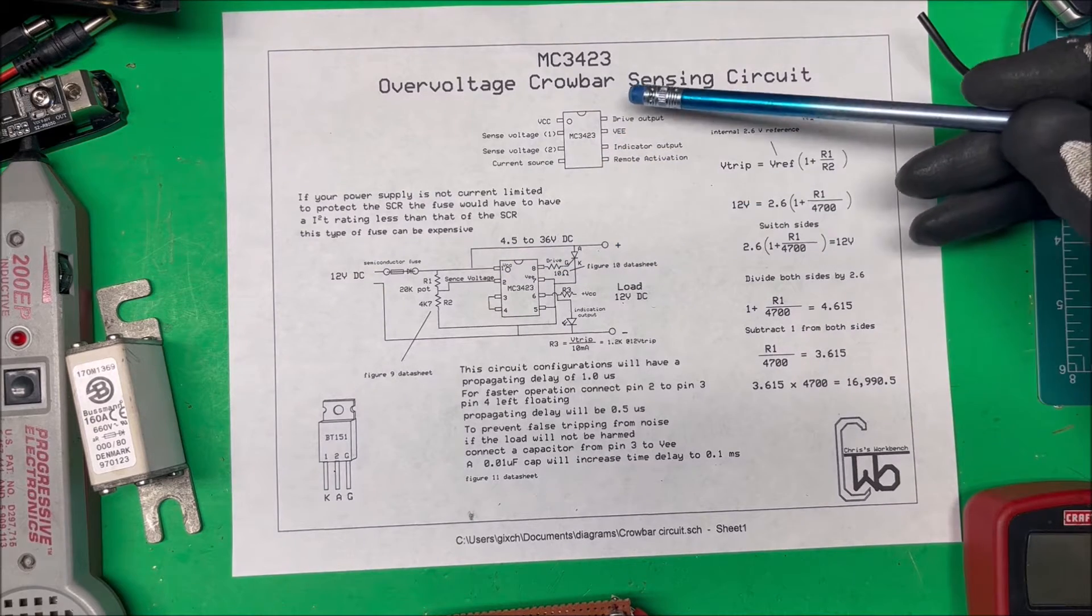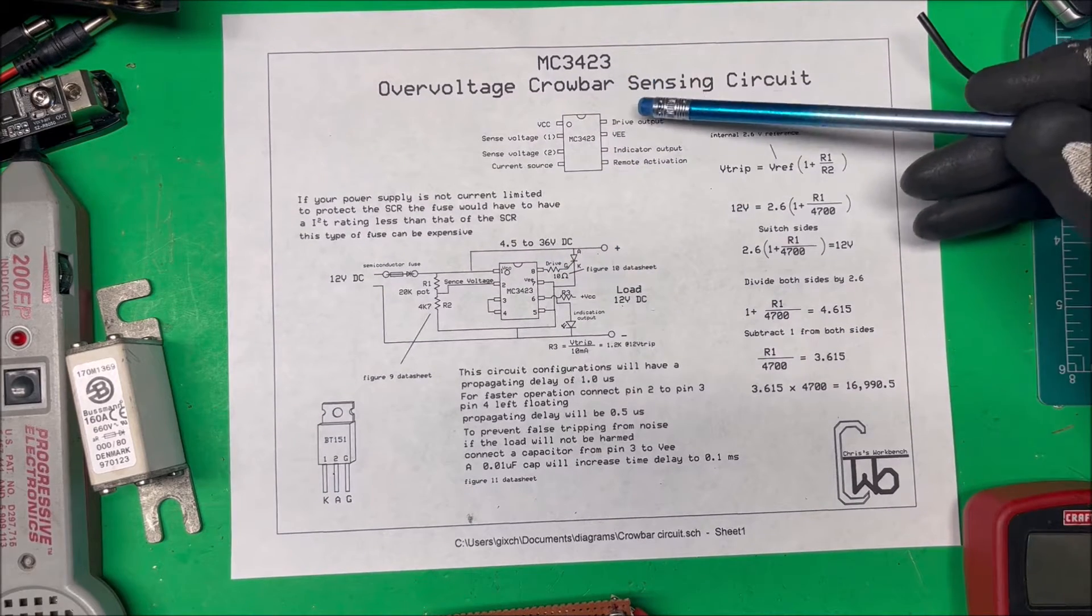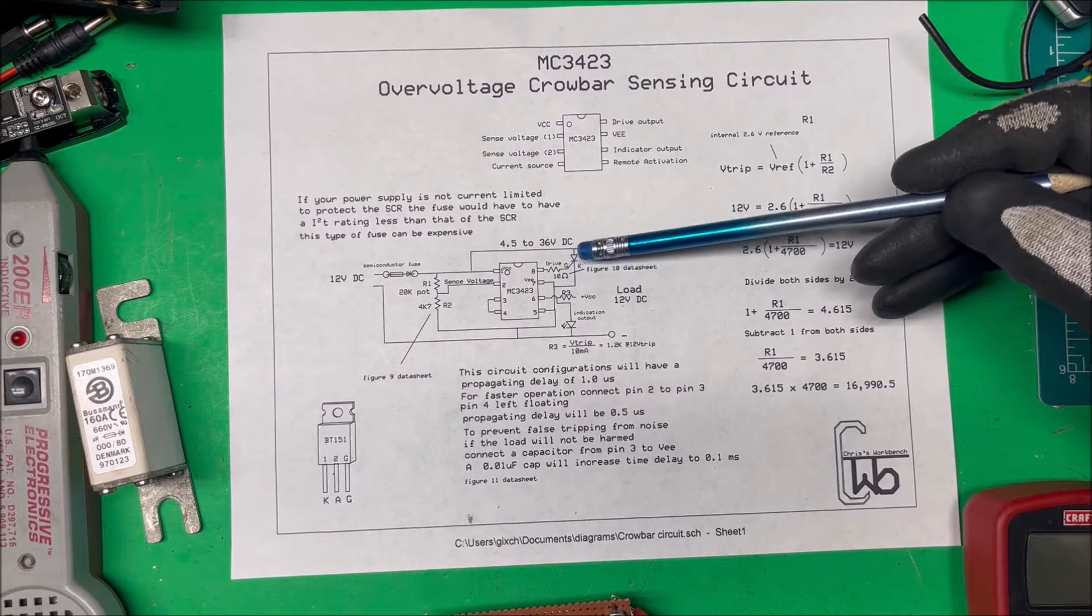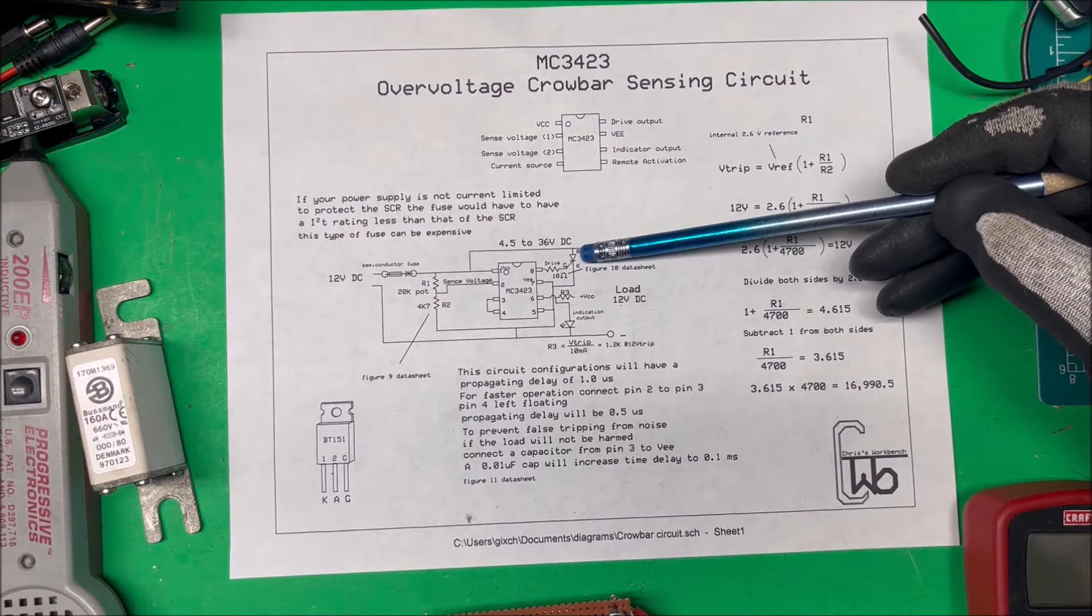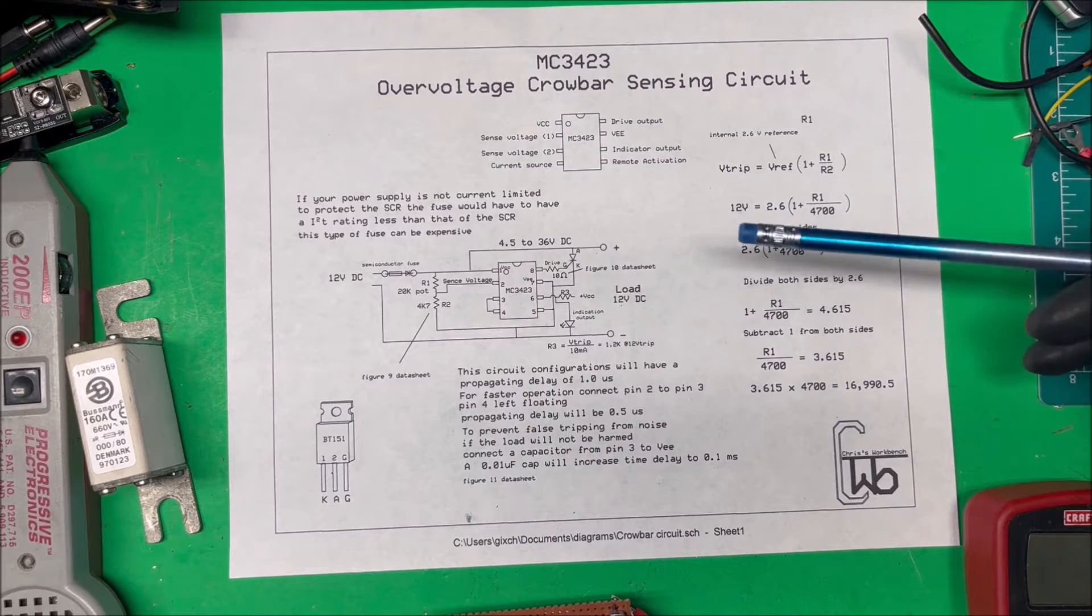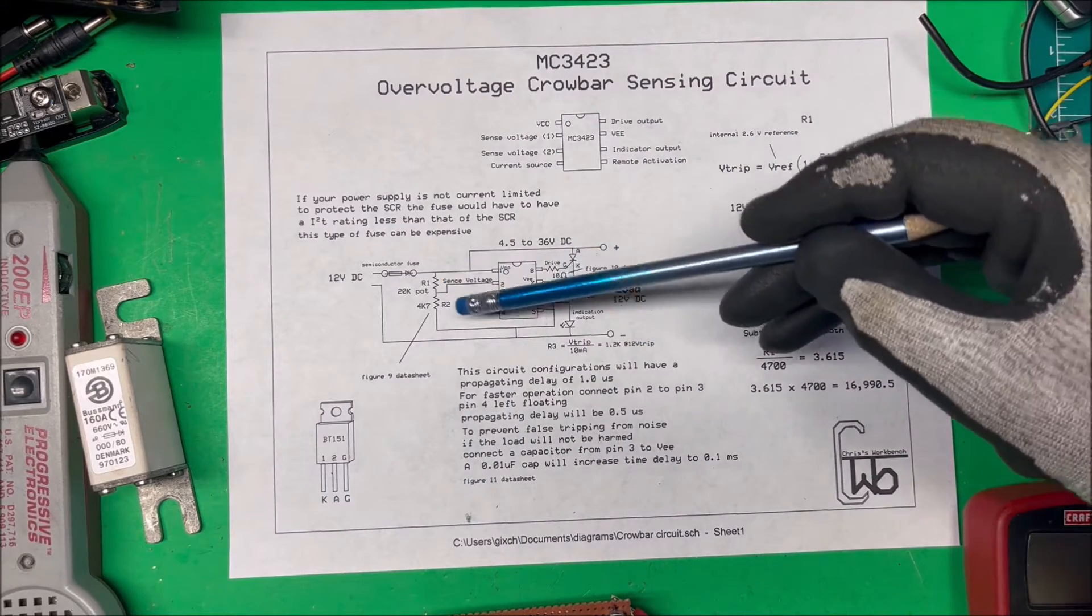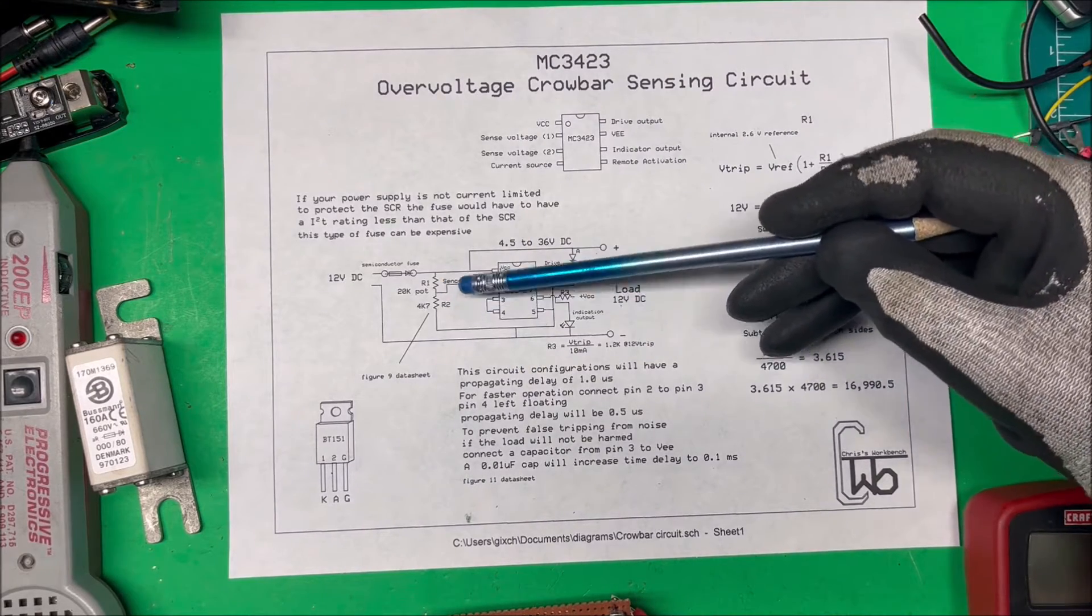When that voltage divider reaches 2.6 volts on pin 8, the drive output pin goes high. In this case, we're going to turn on an SCR and short out the power supply. So we need to figure out some resistance here.